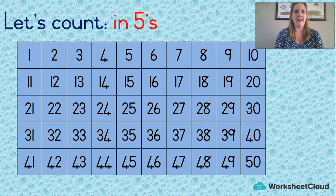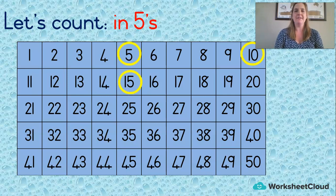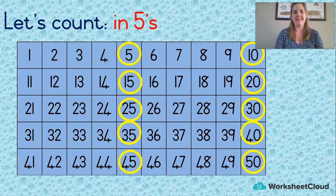Now let's count in fives. Starting at five. Five, ten, fifteen, twenty, twenty-five, yes, thirty, thirty-five, forty, forty-five, fifty. Well done. You see when we count in fives we're going all the way down the fives and then all the way down the tens.